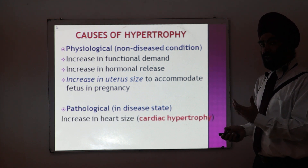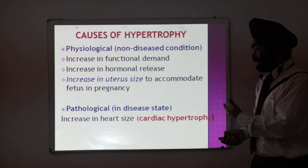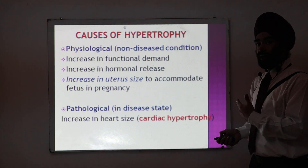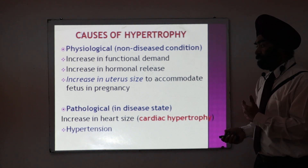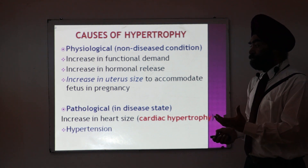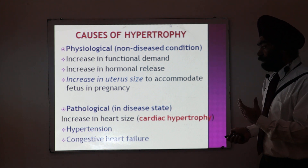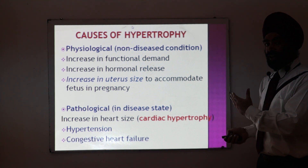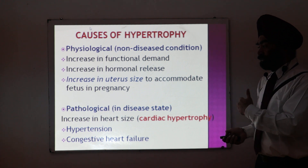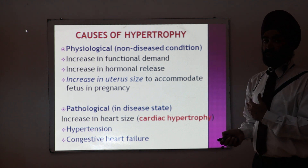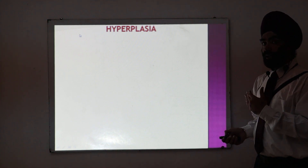But there can also be pathological (diseased) hypertrophy. For example, the heart size may increase — this is called cardiac hypertrophy. It is a diseased condition that can happen if a person is suffering from hypertension (high blood pressure) for a long period of time, or from a disease called congestive heart failure. We will discuss these diseases when we cover the cardiovascular system.